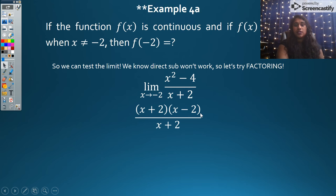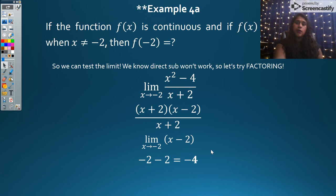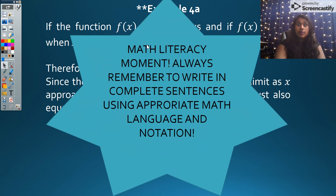I'm going to factor that out. That's a perfect square on top. I get to cancel out those (x + 2)s. Now I can plug this in and I actually get -4. So that tells me my limit equals -4. If my limit equals -4 and my function is continuous, then my function value has to equal -4. And there's my literacy statement for you guys. Remember, math literacy is so important. Always write in complete sentences, use appropriate language and notation.